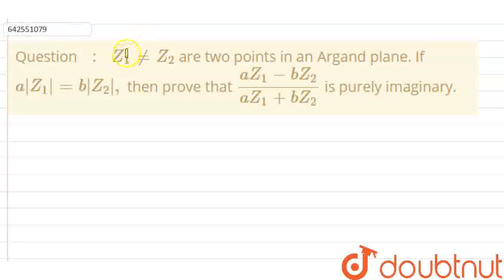Okay students, let's start solving this question. It is given that z1 is not equal to z2 are two points in the Argand plane. If a mod z1 is equal to b mod z2, then we have to prove that az1 minus bz2 divided by az1 plus bz2 is purely imaginary.